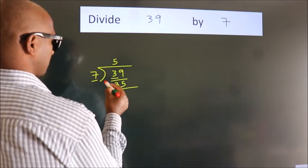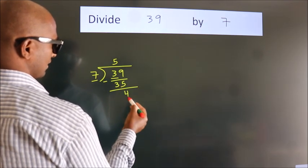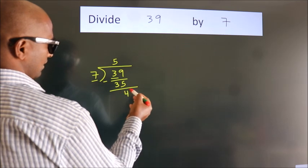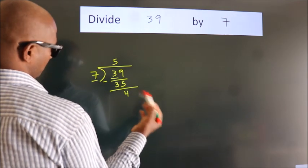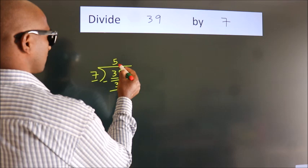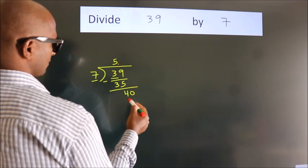Now we should subtract. We get 4. After this, no more numbers to bring it down. So what we do is we put dot take 0. So 40.